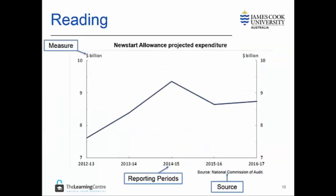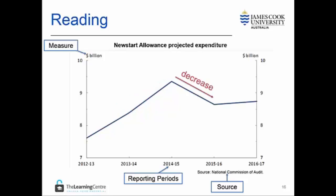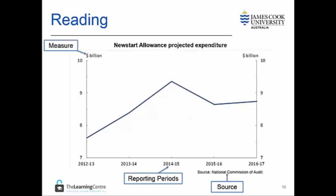Line graphs are useful for displaying data that changes over time. In this graph we can see that the chart measures projected expenditure in billions of dollars from the period 2012-13 to 2016-17. The line represents the shape of the change. Here we can see an increase in expenditure, a decrease in expenditure, and stability in expenditure. We can easily note the peak expenditure and work out the difference in expenditure between the start and the end of the period.